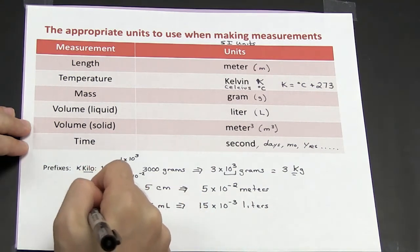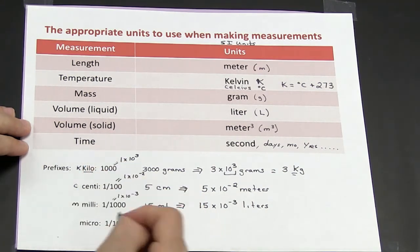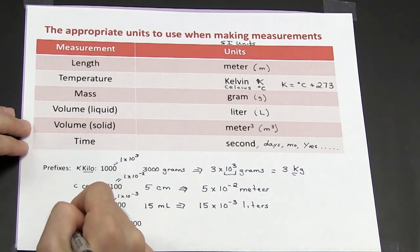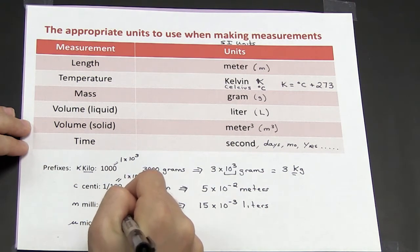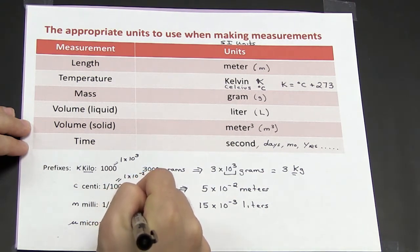The symbol for milli is little m, and the symbol for micro is the Greek letter mu. Micro is 1 over 1 millionth, which is the same thing as 1 times 10 to the minus 6.